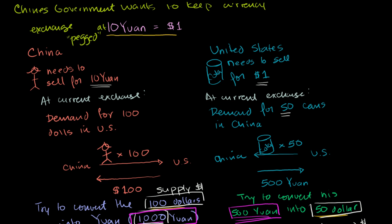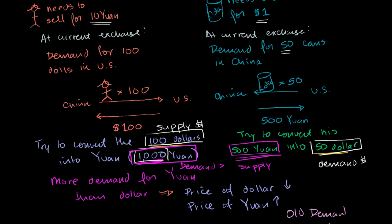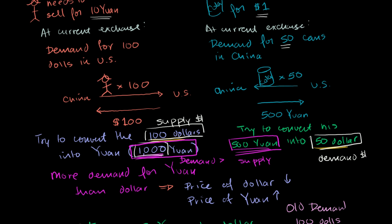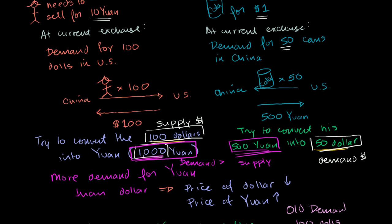And the way you do that, the Chinese central bank can say, to keep our yuan devalued, we will print money. So let me draw the Chinese central bank. So right over here we have the Chinese central bank.